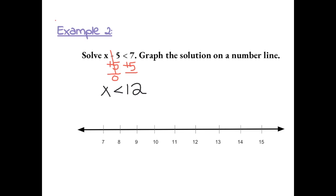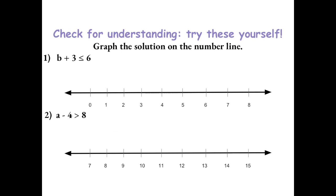To graph this, I'm going to put an open circle at 12, because 12 itself is not a solution, but anything less than 12 is, so I'm going to shade anything less than 12 on a number line. Try these yourself to check for understanding.